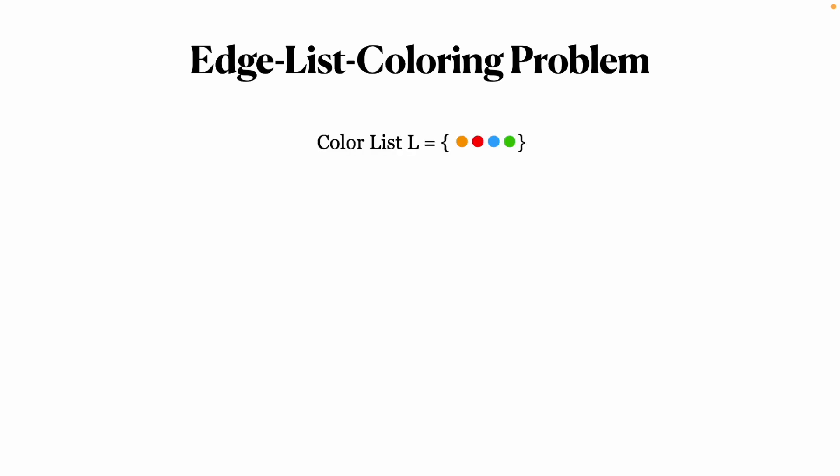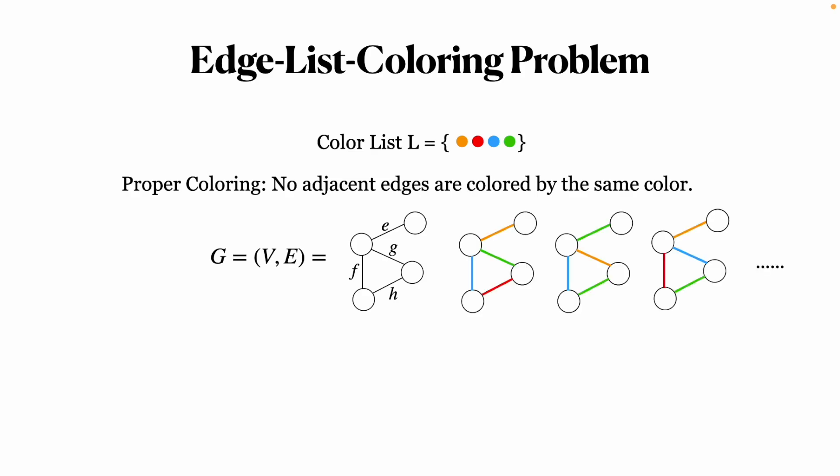Let's begin with the edge coloring problem. Given the graph G and the color list L, the objective is to assign a color from L to each vertex such that no two adjacent edges have the same color. We call such an assignment a proper coloring.